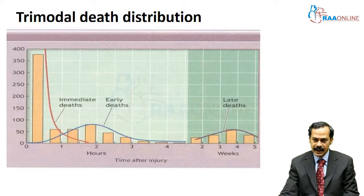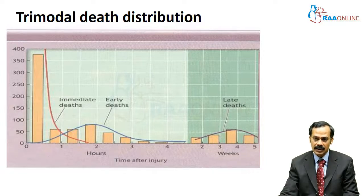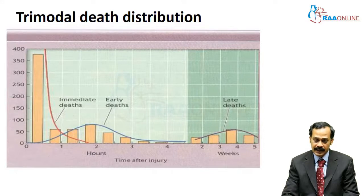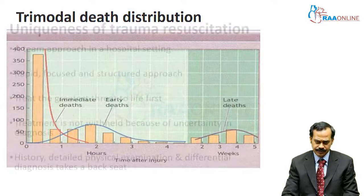Late deaths occur after the second week and peak around the fourth week. The causes may include sepsis or multi-organ dysfunction syndrome. Again, if you treat these patients appropriately, these late deaths are also preventable.